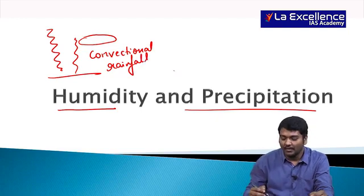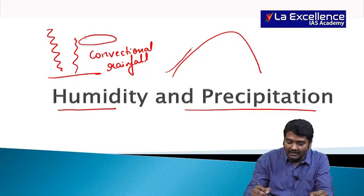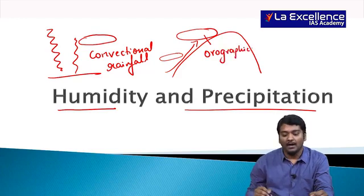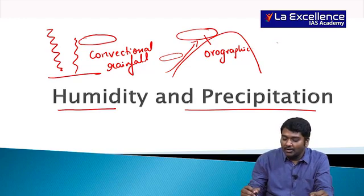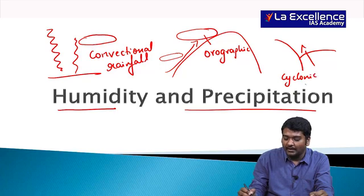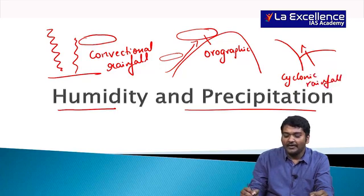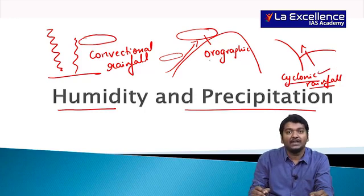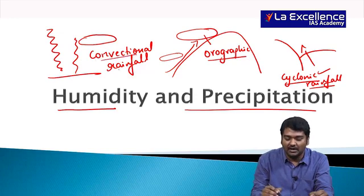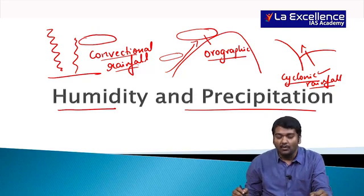If you have a mountain and the air rises, moisture forms clouds — we call that orographic rainfall. When talking about cold fronts and warm fronts where air is rising above, that is called cyclonic rainfall. Rainfall associated with cyclones is cyclonic rainfall, with mountains is orographic rainfall, and with heating of the Sun is conventional rainfall.